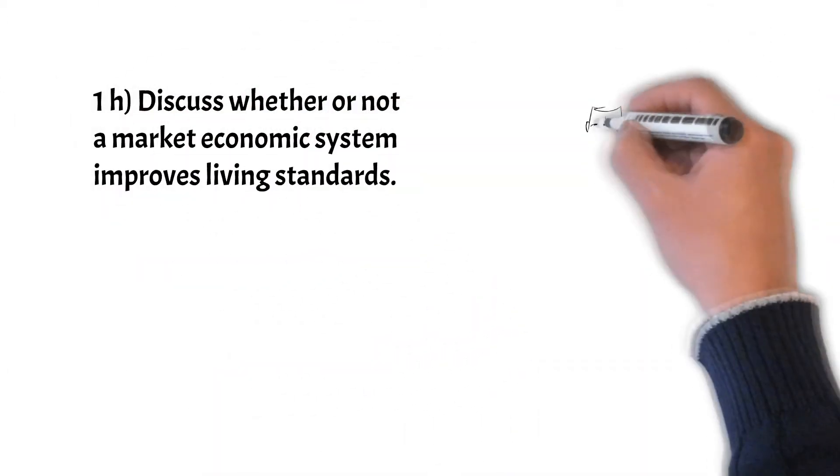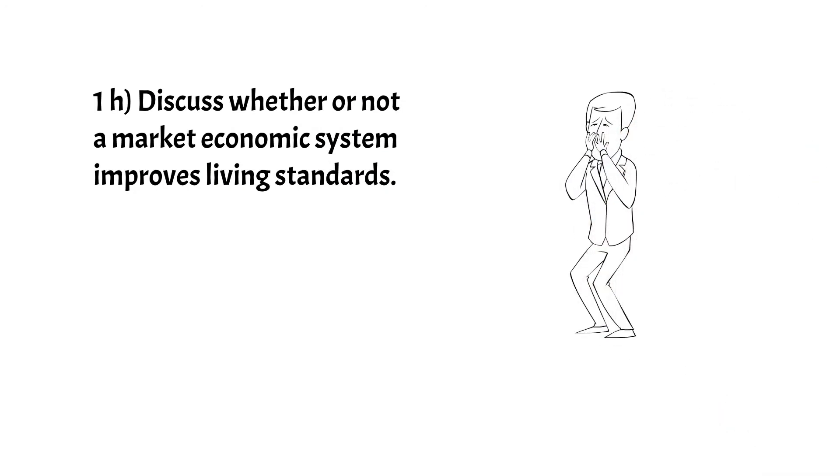Now question 1h: discuss whether or not a market economic system improves living standards. Again, discuss means that we have to mention both the positives and negatives around a market economic system. Firstly the positives: starting with economic freedom—consumers and producers can make their own decisions on what to consume and produce. No government intervention enables a more efficient allocation of resources. Firms react to the wants of consumers to gain profits for themselves. Then consumers are fairly likely to get what they want and gain high levels of satisfaction from their income. Also, costs are lower and prices are lower and thus are more affordable.